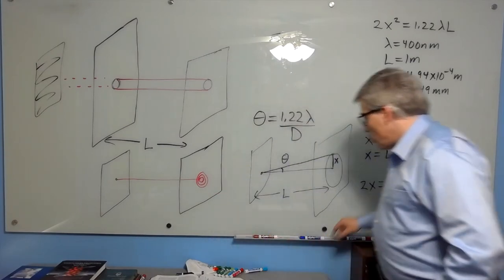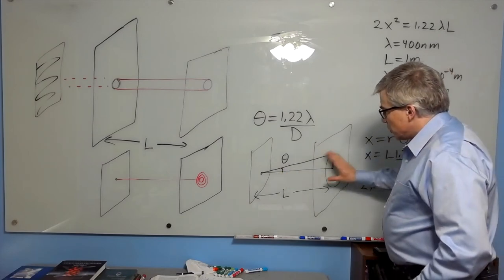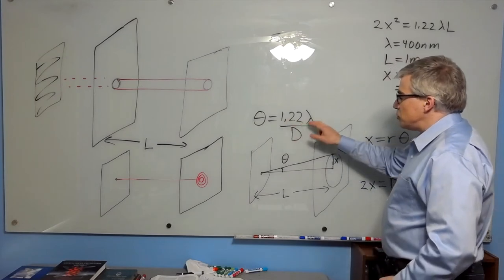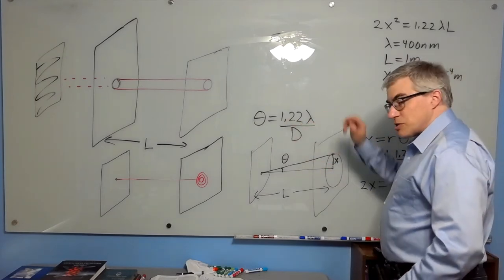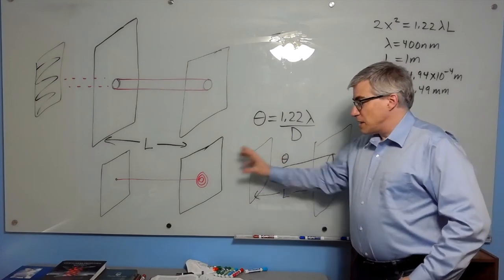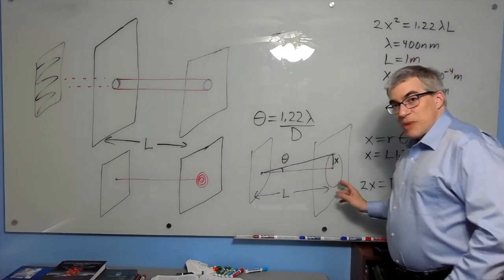The central maximum, the important part, has 85% of the light. The size of that is going to be governed by this equation. The angle that covers the radius is 1.22 lambda over d. Lambda is the wavelength, d is the diameter of the hole. What's going to control the size of the spot is the size of the hole versus the size of the diffraction pattern.